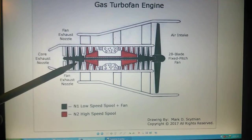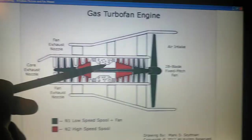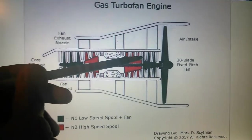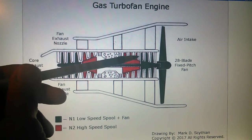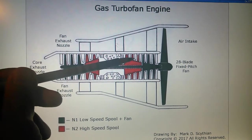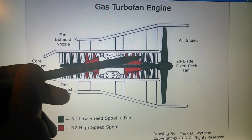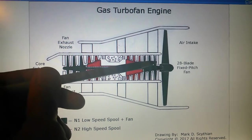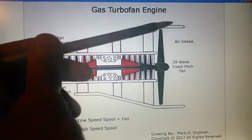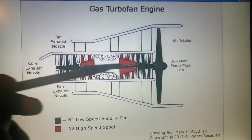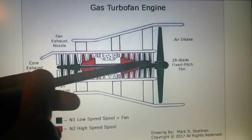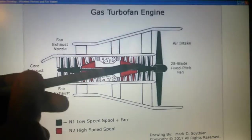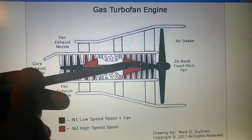When the starter is thrown, it is the N2 that rotates, drawing in air between the compressor rotors and stators, causing a vacuum effect to eventually induce rotation on the N1 low speed compressor, which is also connected to the large fan and the low speed turbine. Eventually the N1 and N2 spools start to catch up to a relatively close RPM.